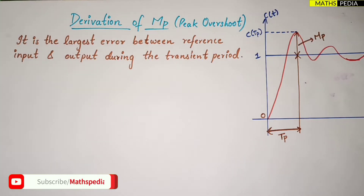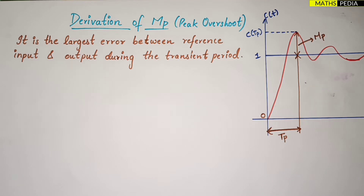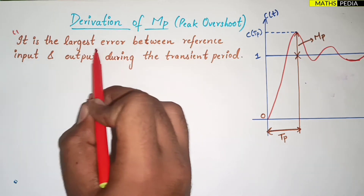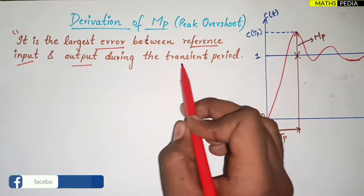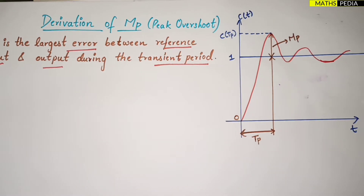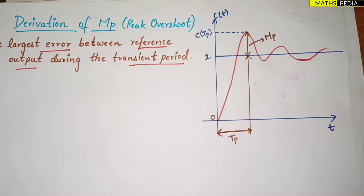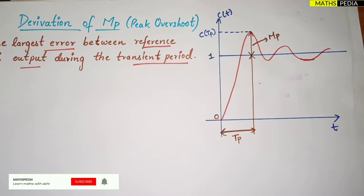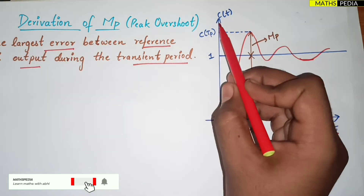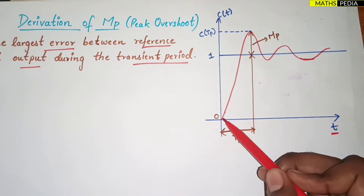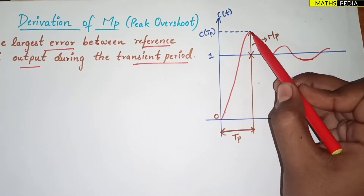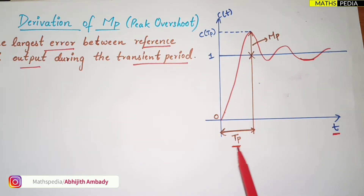In this video we are going to do the derivation of peak overshoot, that is Mp. The definition: it is the largest error between the reference input and the output during the transient period. Let us see the graph — the x-axis is time, the y-axis is c(t). The transient period starts from zero and reaches a peak value.